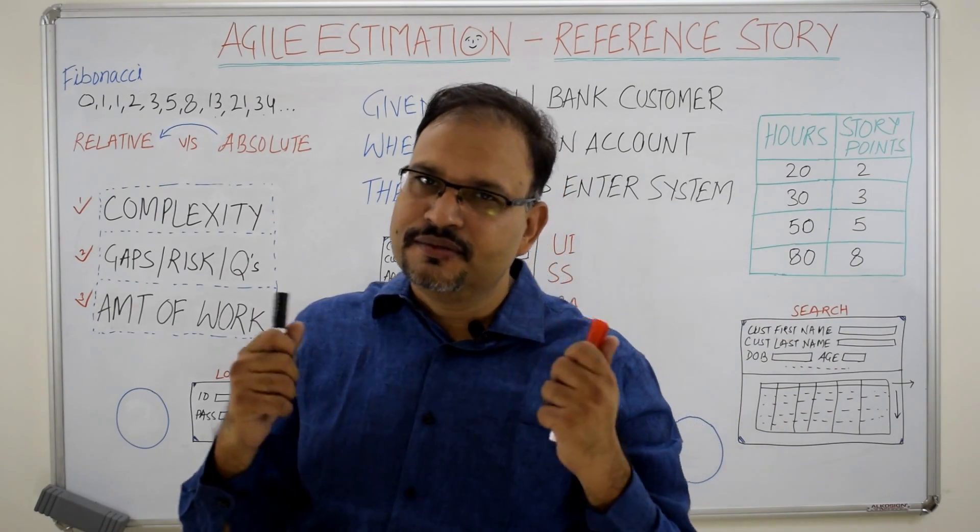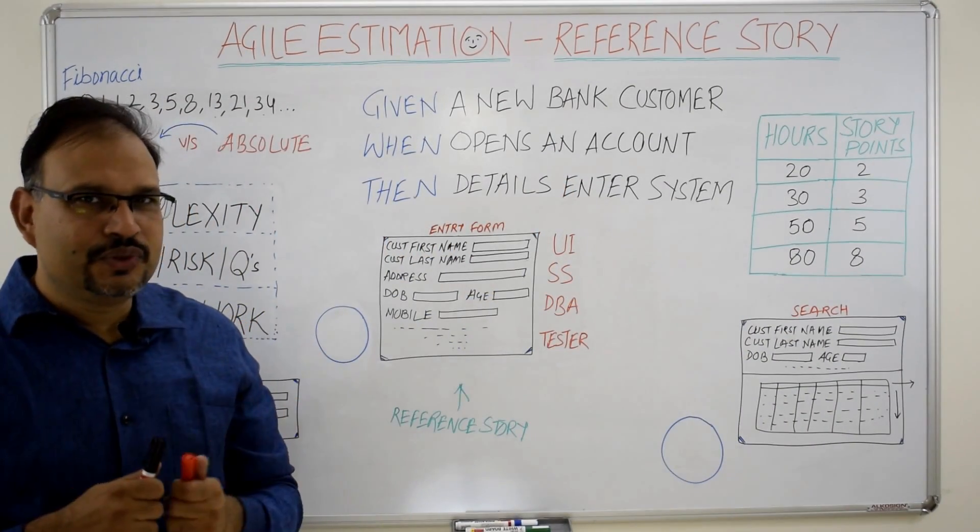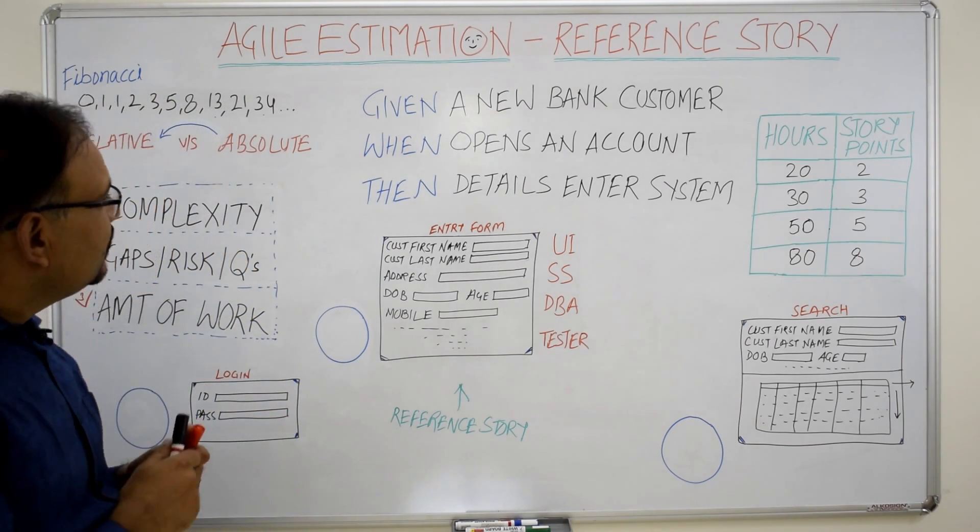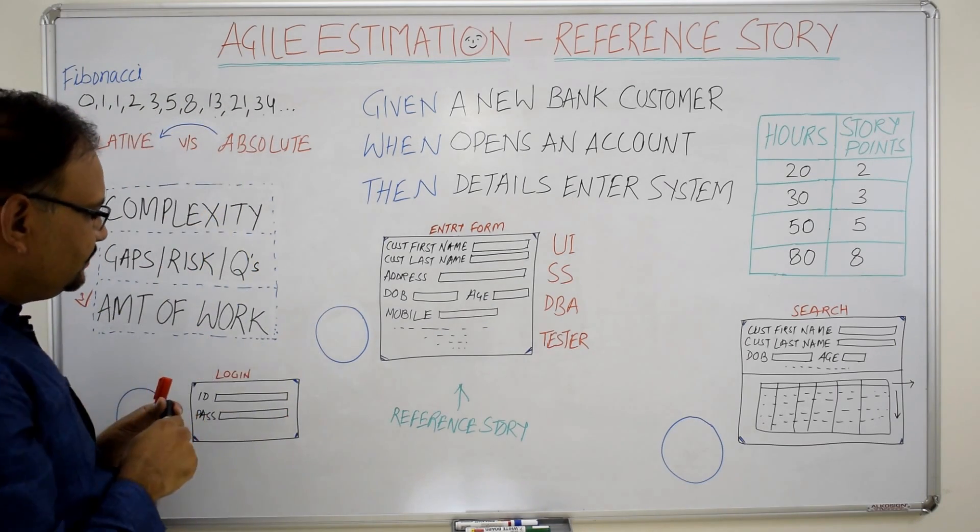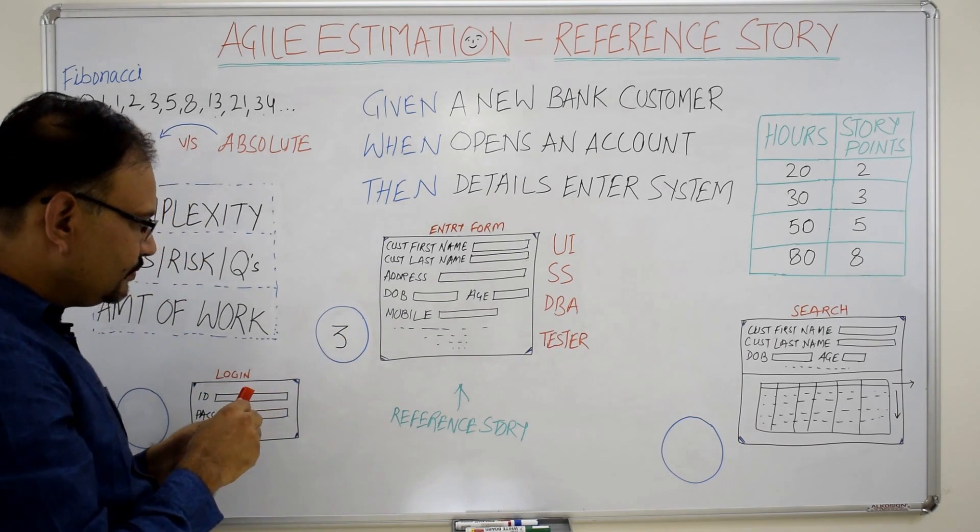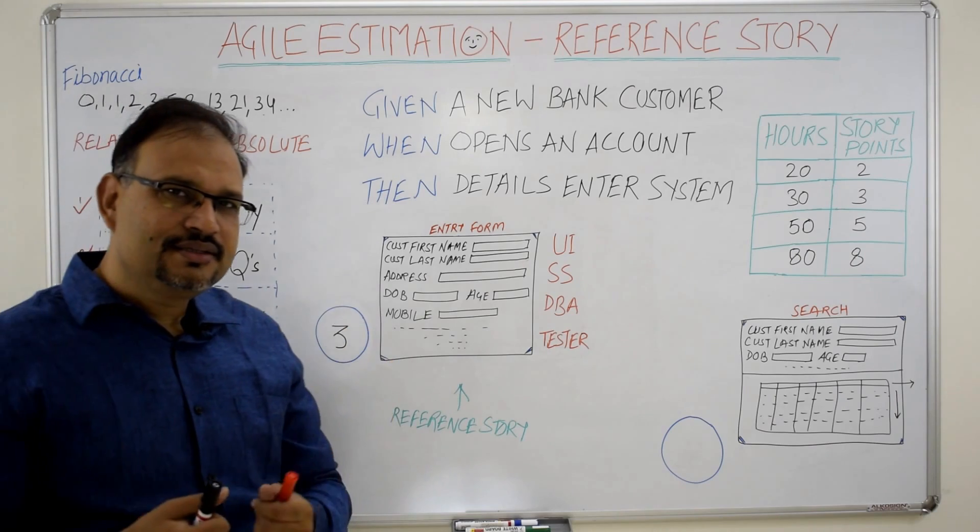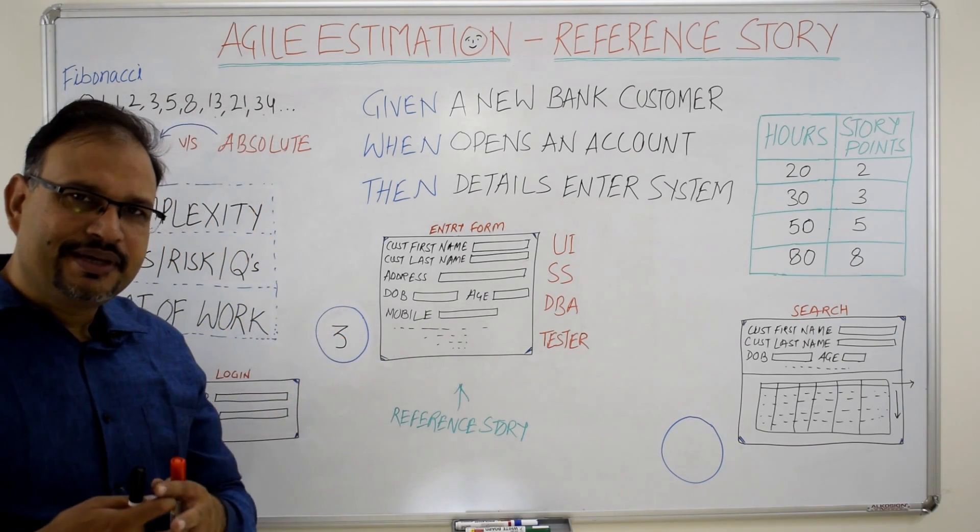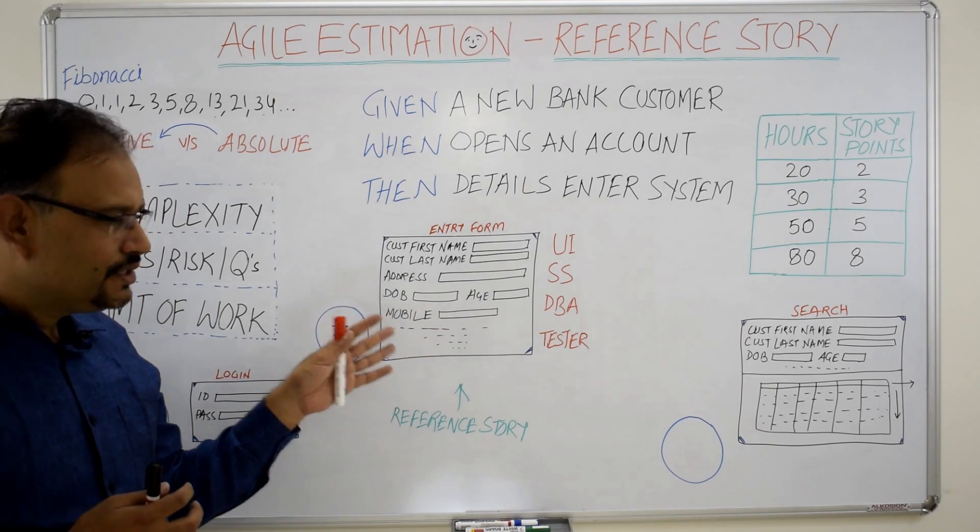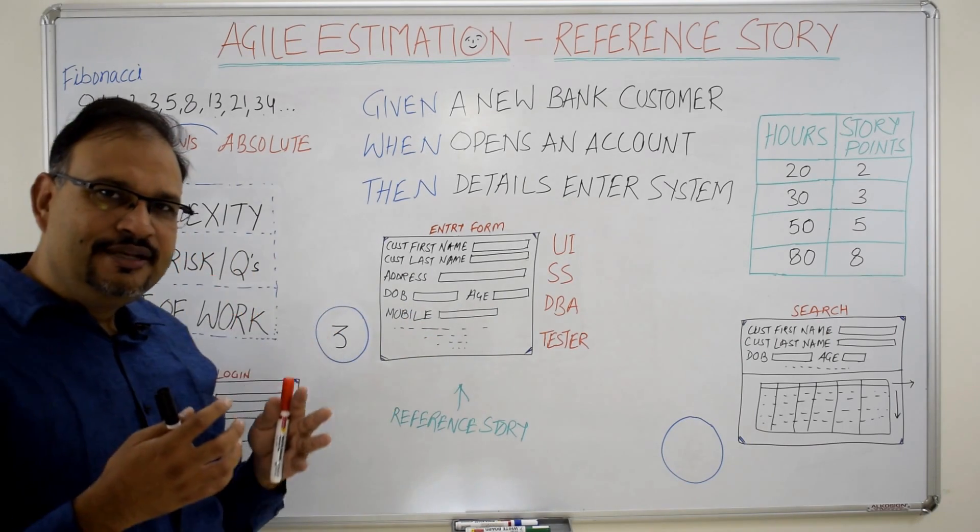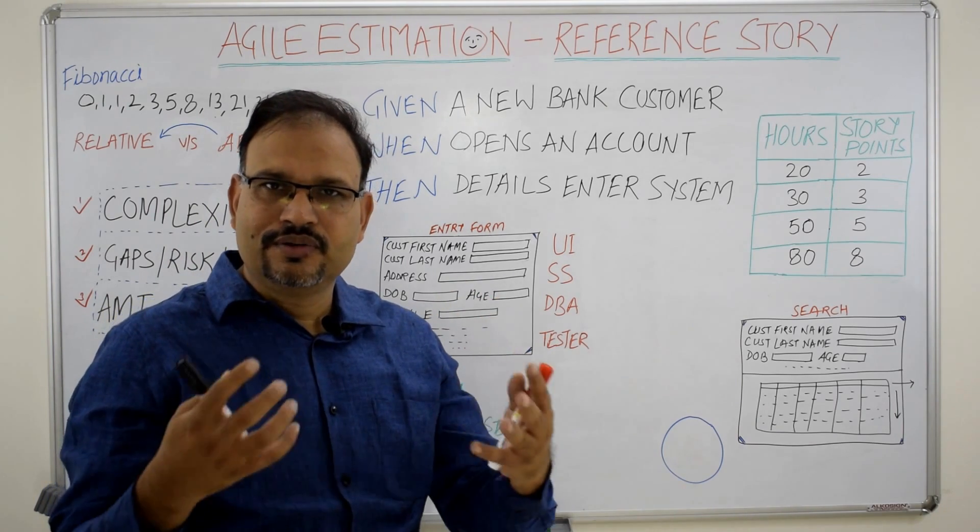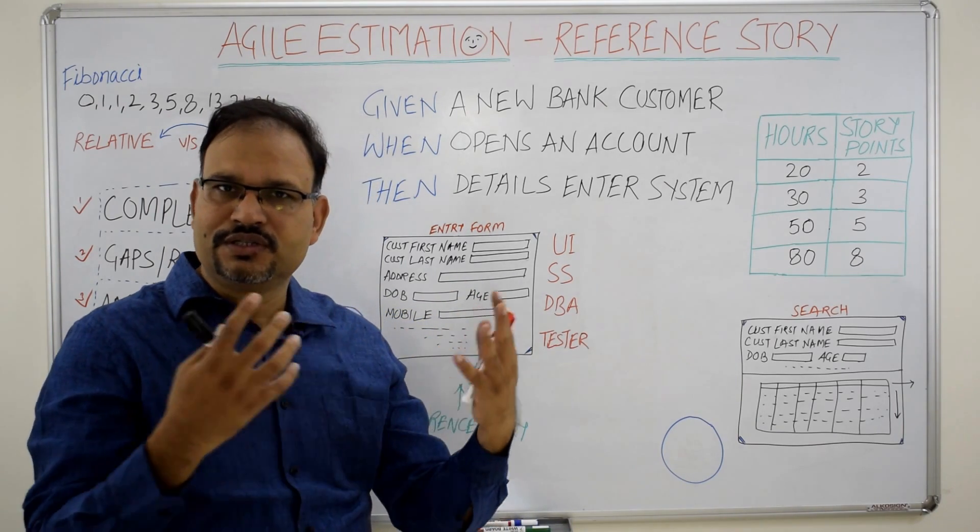In the ideal world, a simple story is picked up as a reference story and is assigned a small number from the Fibonacci series. That number normally is three. And then we ask scrum team to start comparing rest of the stories in the backlog with the reference story based on these three criteria and see if those stories attract a higher story point or a lower story point and then continue the estimation journey.